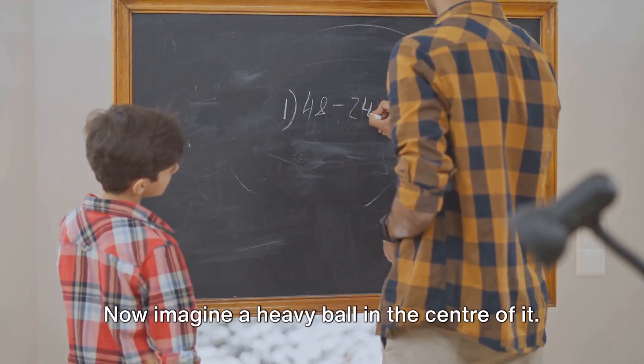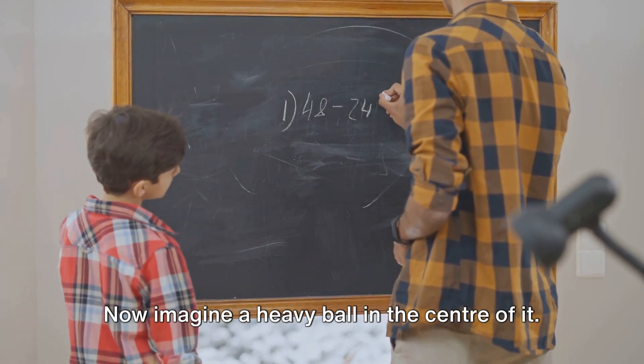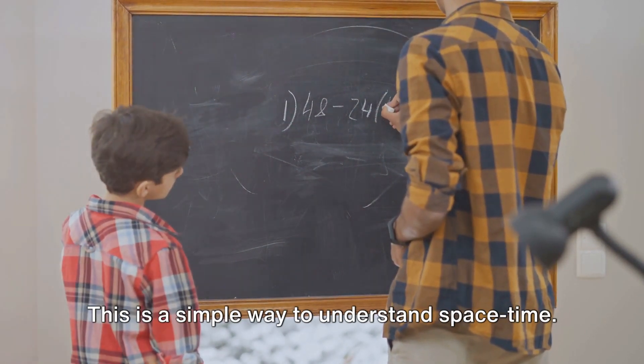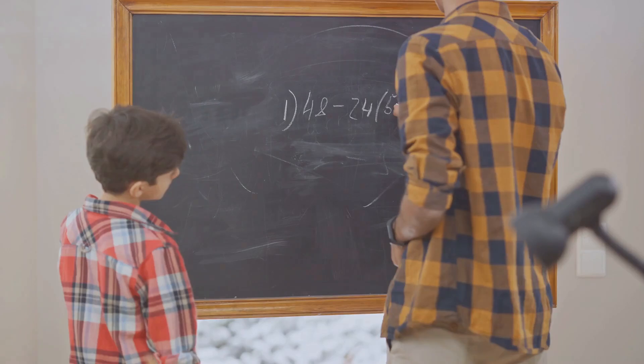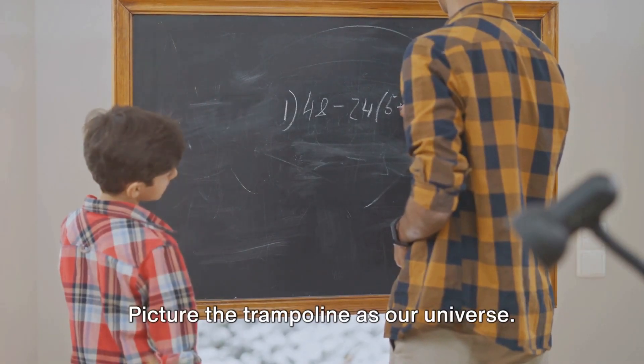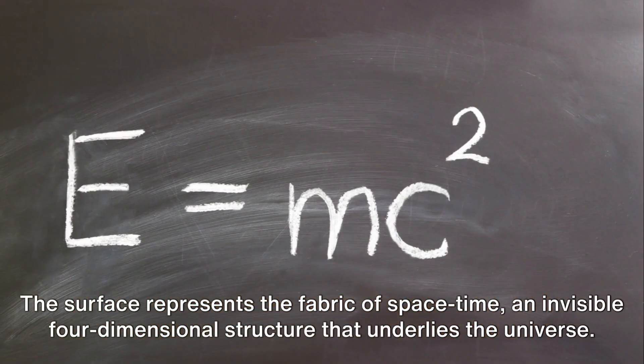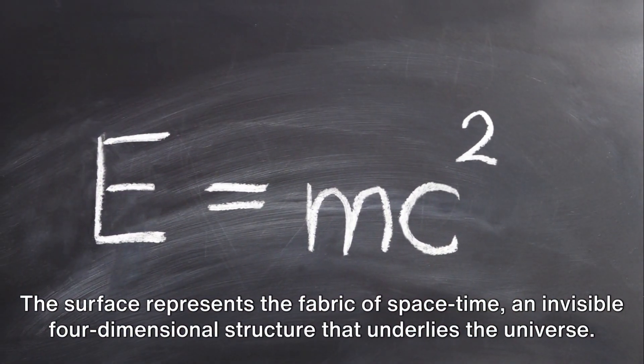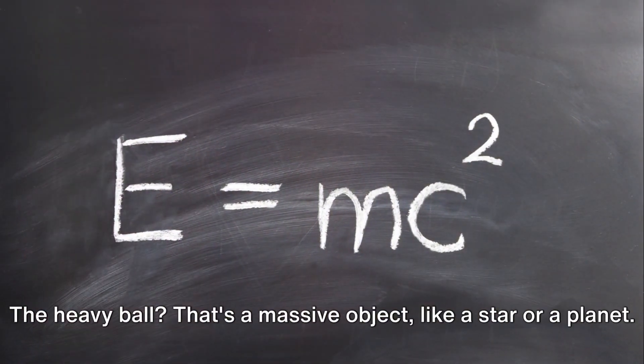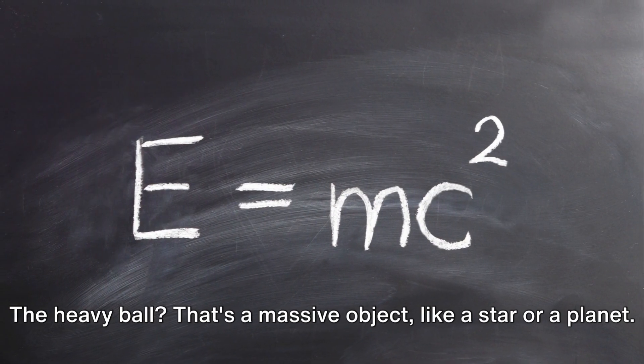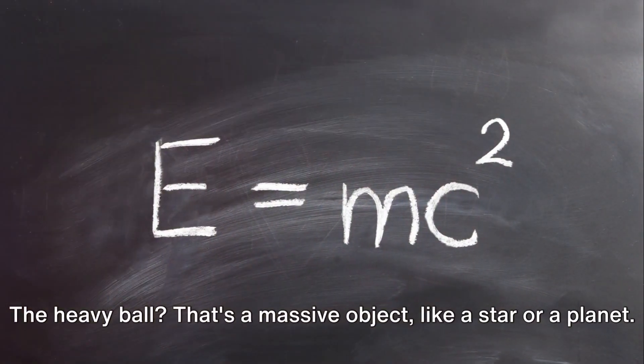But we'll save that for our next scene. So, buckle up and prepare to delve deeper into the wonders of Einstein's universe. Imagine a trampoline. Now imagine a heavy ball in the center of it. This is a simple way to understand space-time. Picture the trampoline as our universe. The surface represents the fabric of space-time, an invisible four-dimensional structure that underlies the universe. The heavy ball? That's a massive object, like a star or a planet.